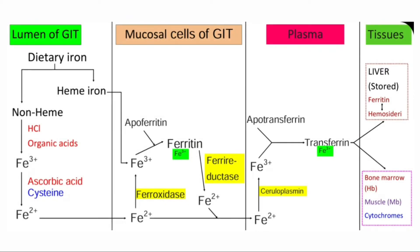In brief, here is what happens in the lumen of the GIT. Food contains two types of iron: heme iron and non-heme iron. Heme iron directly enters into the mucosal cell, whereas non-heme iron — which contains the Fe3+ form — is released by HCl and other organic acids. Once released, it is converted into the ferrous form by ascorbic acid and cysteine. This ferrous iron then binds with the divalent metal ion transporter and is transported into the mucosal cells.